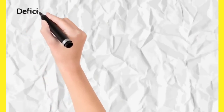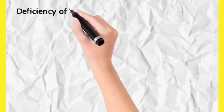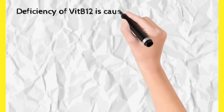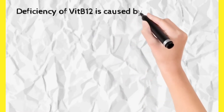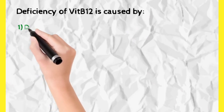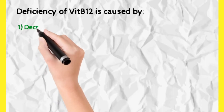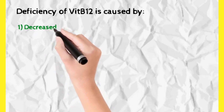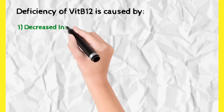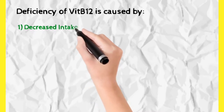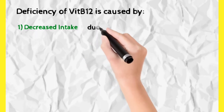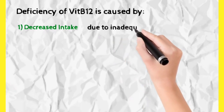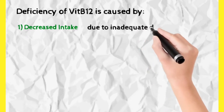Deficiency can occur from three causes: decreased intake, impaired absorption, or increased requirement. Decreased intake can be because of inadequate diet — not eating vitamin B12-rich foods, or not eating a complete diet. This is the reason why we are asked to take food regularly with a variety of food products, so that deficiency does not occur.